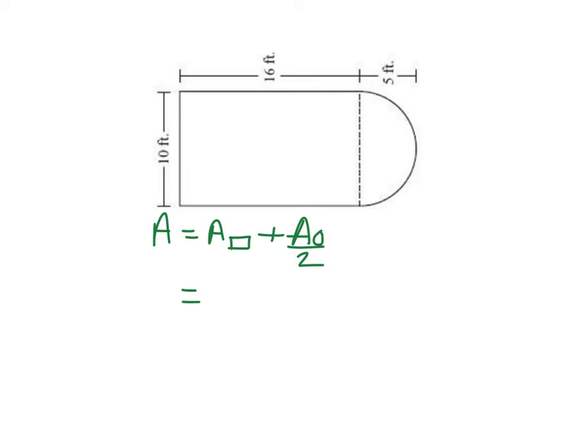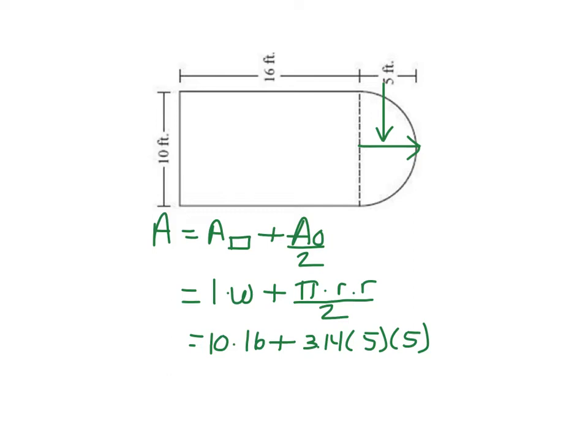Now the area for a rectangle is length times width, and the area of a circle is pi times radius times radius, and because it's a semicircle I'm dividing it by 2. So the length of the rectangle is 10, the width is 16, pi is 3.14. The radius of my circle is 5. I'm just going to drop down that dimension there to the center of my circle. So it's 5 times 5 divided by 2.